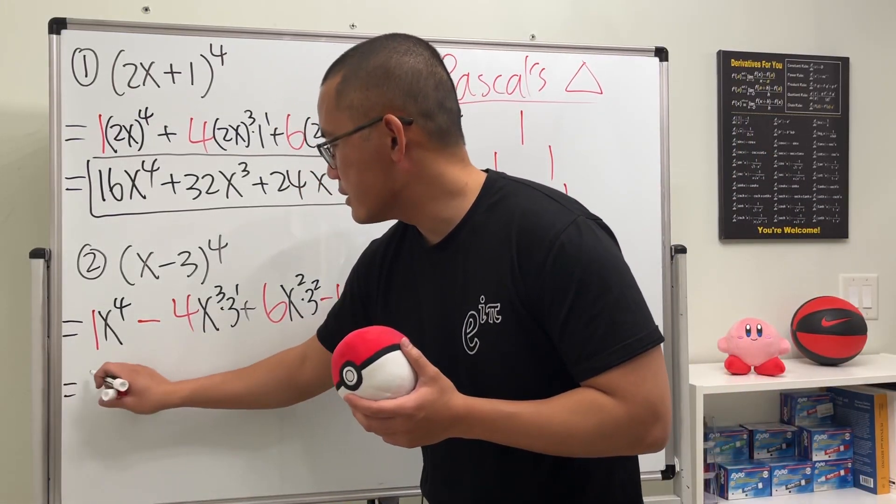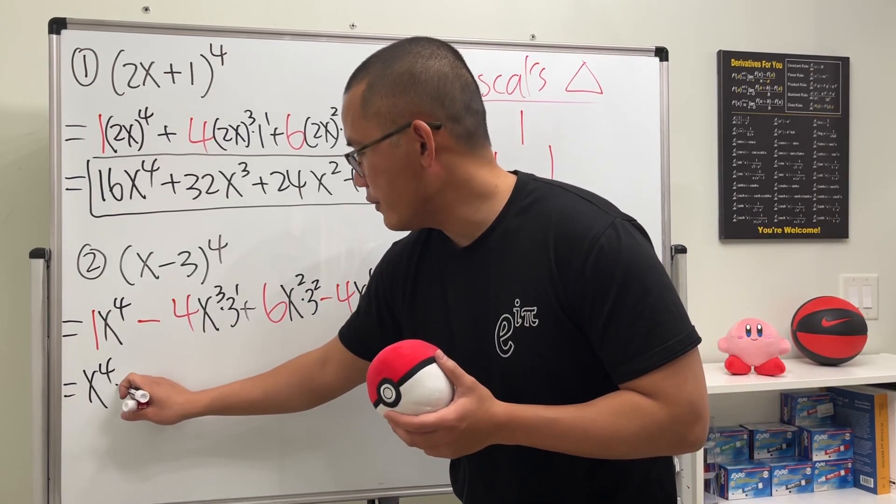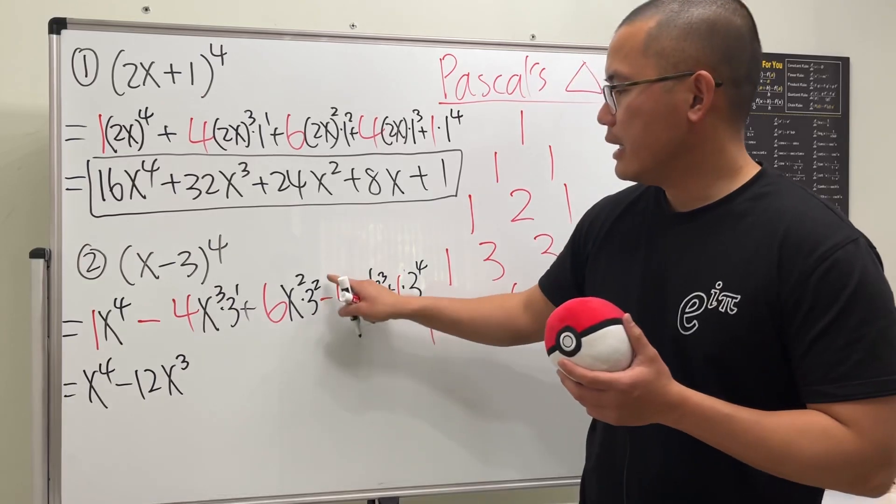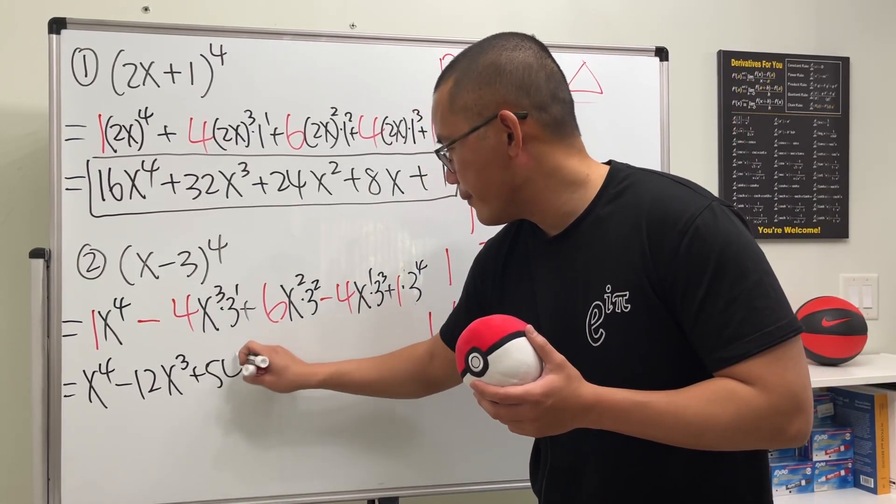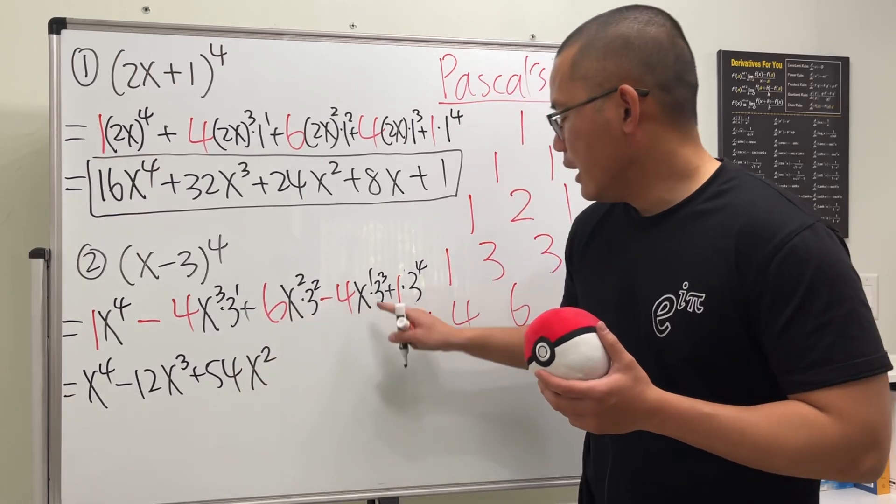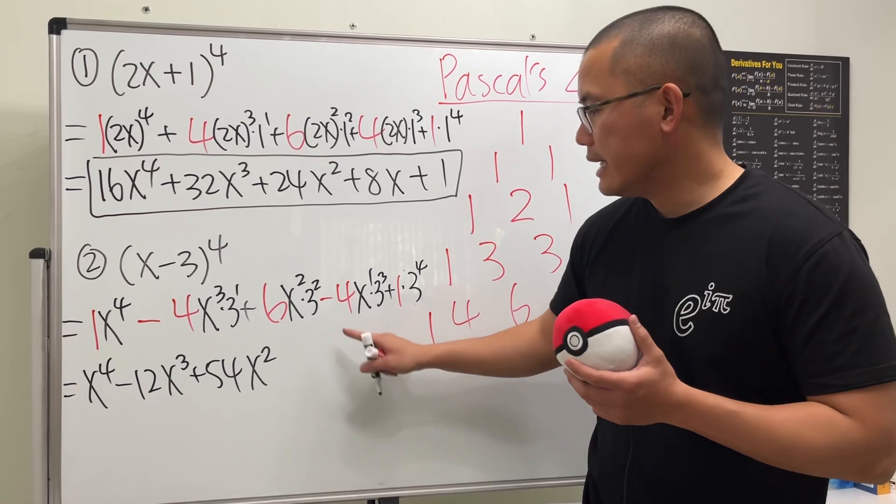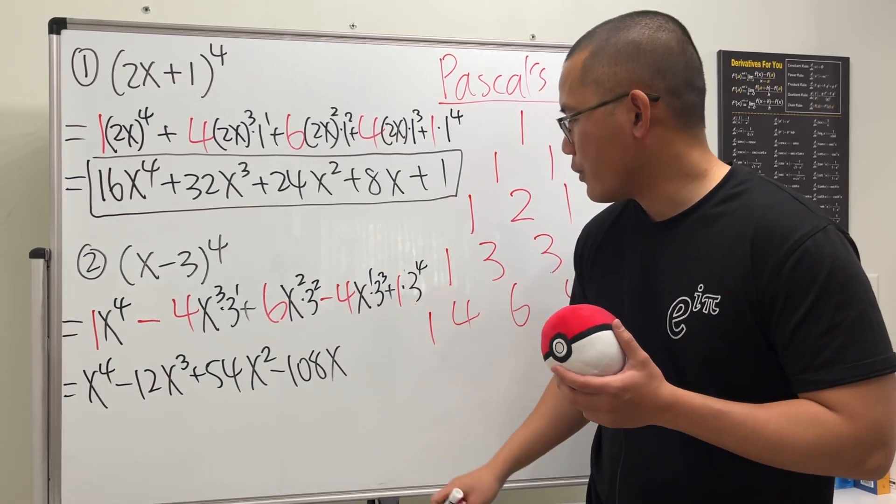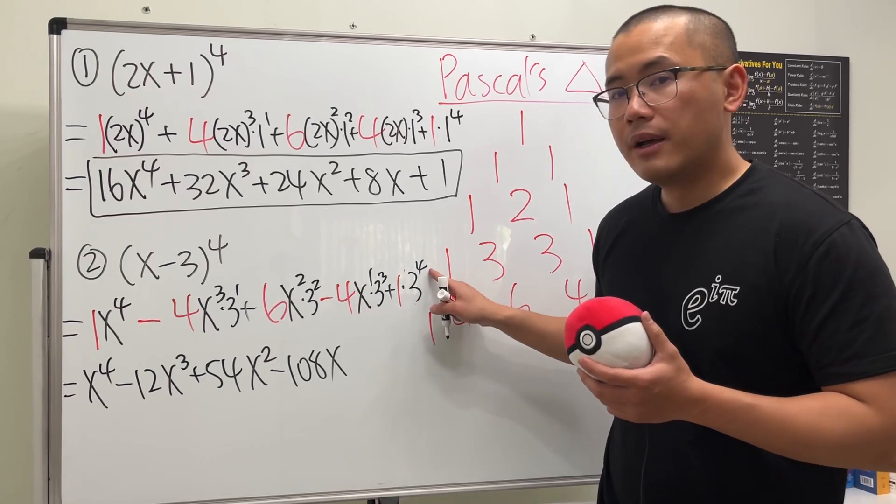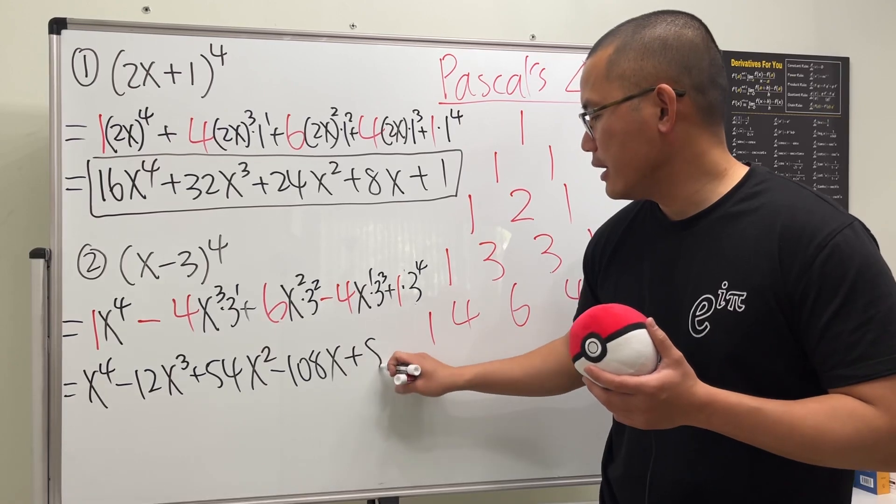And lastly, we just multiply these things out. We will get x to the fourth power. 3 times 4 is 12. And that's a minus 12x to the third power. This is 9 times 6 is 54x squared. This is 27. Times 4 is 108. And that's a minus. And then we have x to the first power. And lastly, this is 3 to the fourth power. It's just 81. Times 1. Doesn't matter. So plus 81.